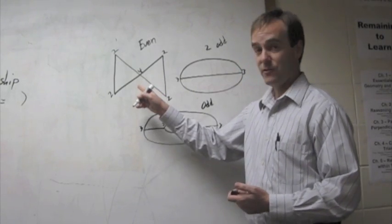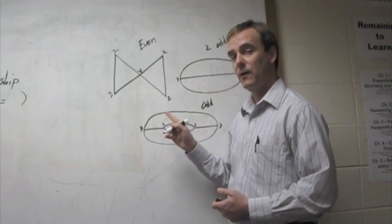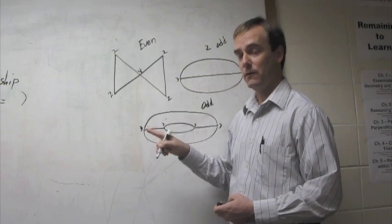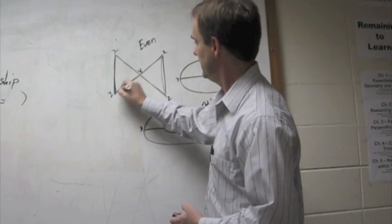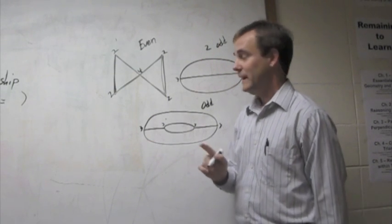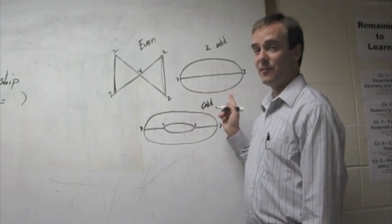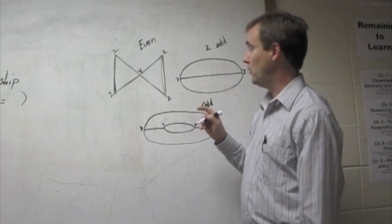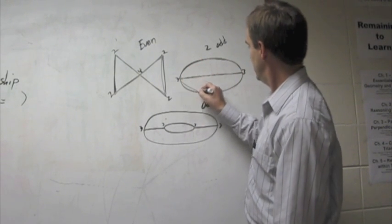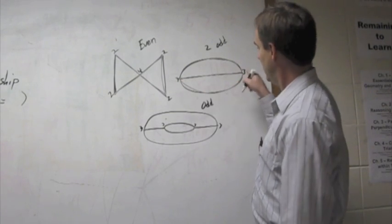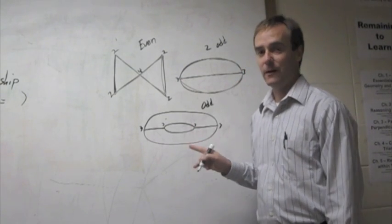And here's what he discovered: you can do it with the all-even one — you can go all the way around and end back where you started. He noticed on the two-odd-node one, you can start anywhere and end somewhere else, but you can cover the whole thing. And he noticed on the all-odd one, you can't get around the whole thing at all.